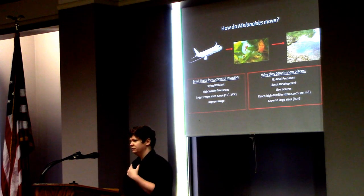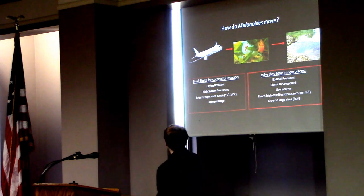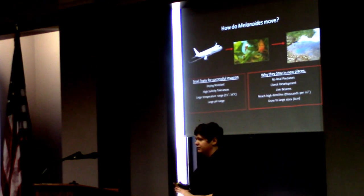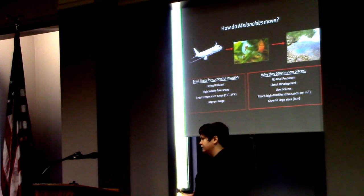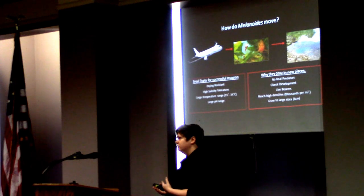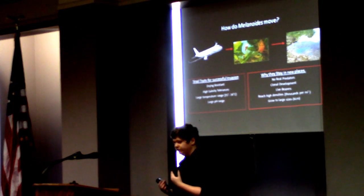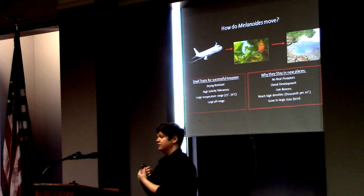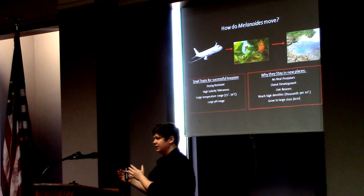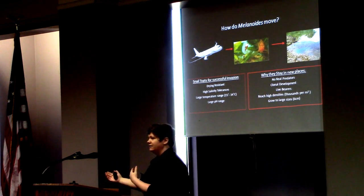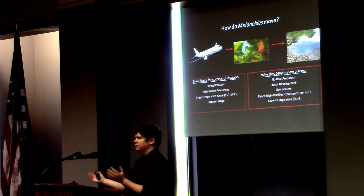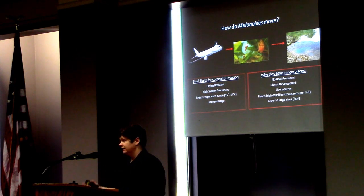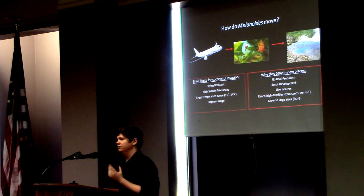How do Melanoides move? They're an invasive species and they're resistant to drying. They can tolerate high salinity, a high temperature range, and pH range. The reason they're able to be so invasive is because they're parthenogenic, which means that females can brood snails in their brood pouches — up to 16 snails — and then live bear those snails, and those snails can go on and produce more snails. They don't even need a male to reproduce. When snails get introduced because of the aquarium industry, they can reproduce with just the introduction of one gravid female.